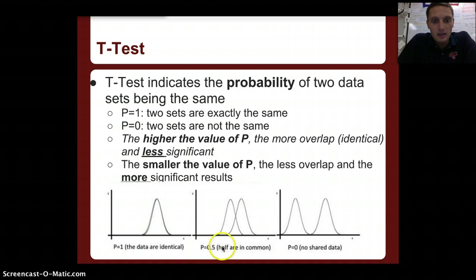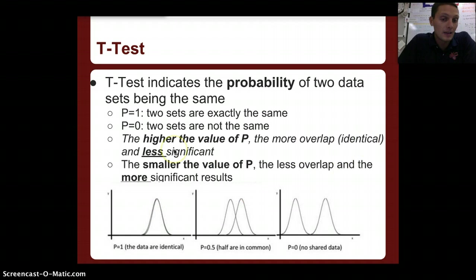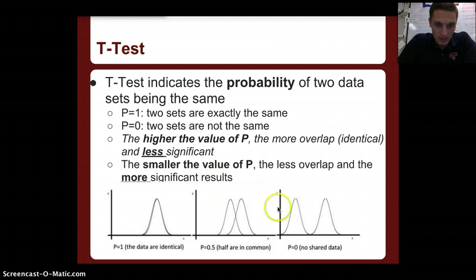At p equals 0.5, they share half of their values in common, so there is some overlap. At p equals 0, they're not the same, so they share no data and there's no overlap. The higher the value of p, the more overlap and the more identical they are — meaning they're less significant. The smaller the value of p, the less overlap and the more significant the results.